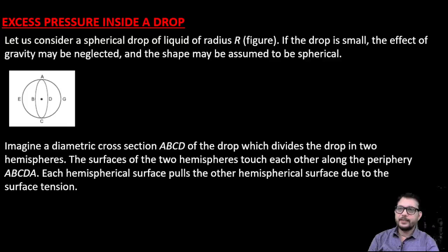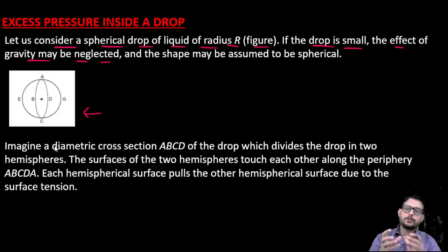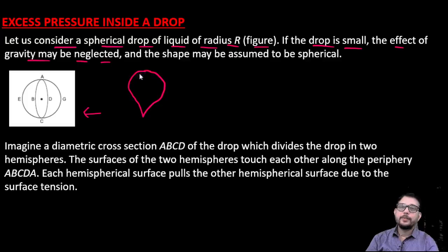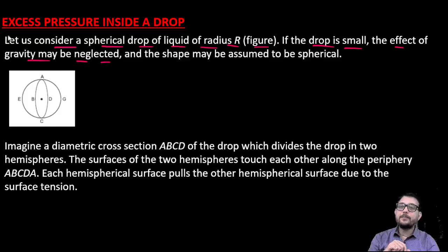Firstly, we consider a spherical drop of liquid of radius capital R, as shown in the figure. In this diagram it is assumed that the drop is very small and the effect of gravity is neglected. Because due to gravity the shape of the drop might be distorted — pointed at the bottom and larger at the top. But if we neglect gravity, the shape of the drop will be completely spherical.